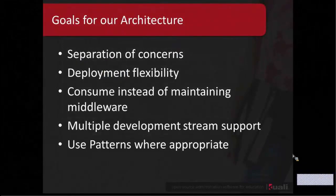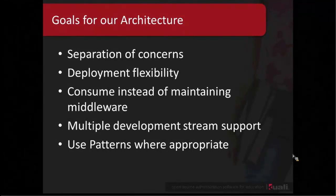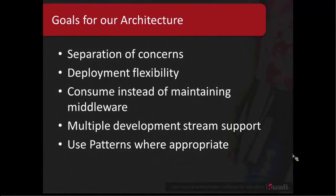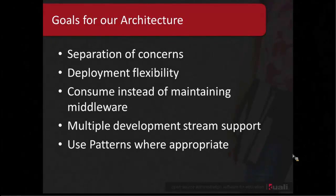The goals of our architecture: separation of concerns. We want the ability to separate our components in such a way that institutions could replace them fairly easily without breaking their ability to upgrade to future versions. We also want some deployment flexibility. One of the issues with implementation of large enterprise systems is you need the ability to have some flexibility with your deployment in order to address performance issues and reconfigure your deployment in a way that makes sense for your team.